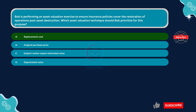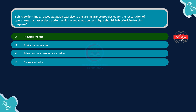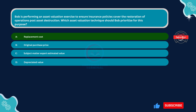The correct answer is Option A: Replacement cost. This is the most appropriate asset valuation technique for ensuring insurance policies cover the restoration of operations post-asset destruction. Replacement cost reflects the expense of replacing an asset with a similar one at the current market price. In the context of insurance, it ensures that the policy covers the full cost of replacing damaged assets, facilitating the restoration of operations.